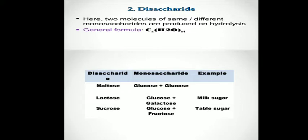In today's session we are going to learn about the second type of carbohydrate, which is disaccharide. A disaccharide is also known as double sugar or bios.